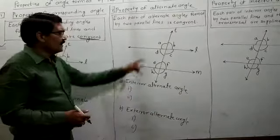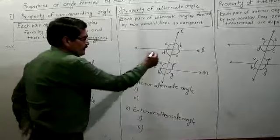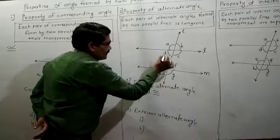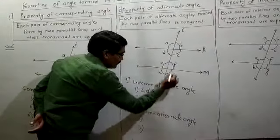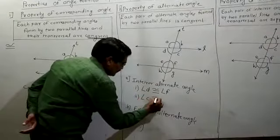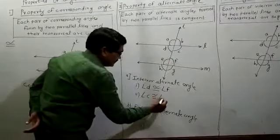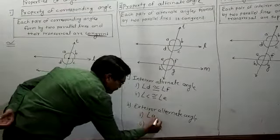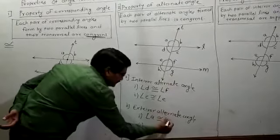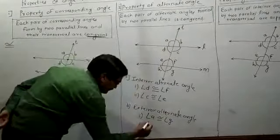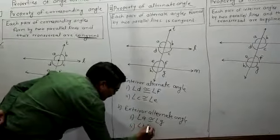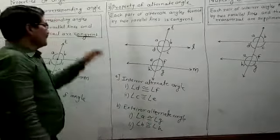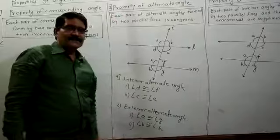Alternate angles are also congruent. For interior alternate angles: angle D is congruent to angle F, and angle C is congruent to angle E. For exterior alternate angles: angle A is congruent to angle G, and angle B is congruent to angle E. These are the alternate angles. Corresponding angles are congruent and alternate angles are congruent.